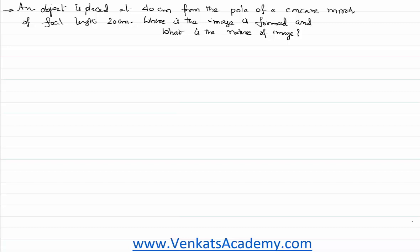Hello everyone, welcome to this video lesson. In this video lesson we are solving a problem based on the reflection of light on a curved surface — that's a mirror, specifically a spherical mirror. The problem is: an object is placed at a distance of 40 centimeters from the pole of a concave mirror of focal length 20 centimeters. What is the image, where is the image, and what is the nature of the image?